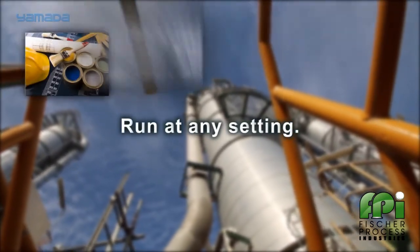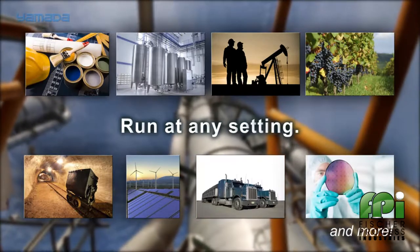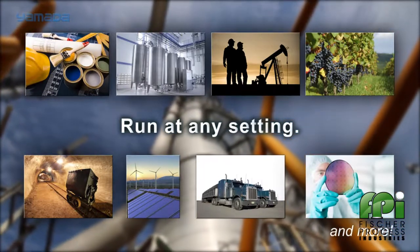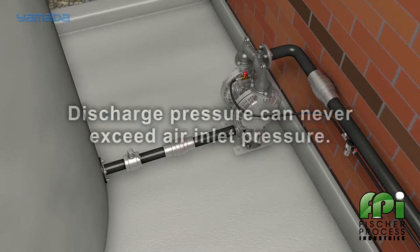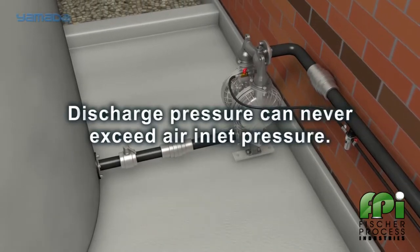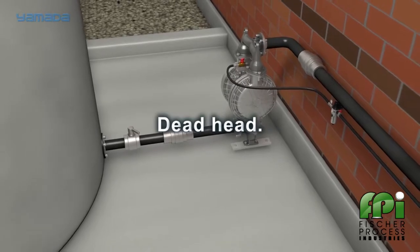Yamada pumps can run at any setting within their operating range simply by adjusting the air inlet pressure. That means one pump can fit a broad spectrum of applications. Yamada pumps can be easily transported and installed. Simply connect the air supply and liquid lines and your pump is ready for use. Discharge pressure can never exceed the air inlet pressure, so the discharge line can be closed with no damage or wear to the pump. We refer to this as deadhead.